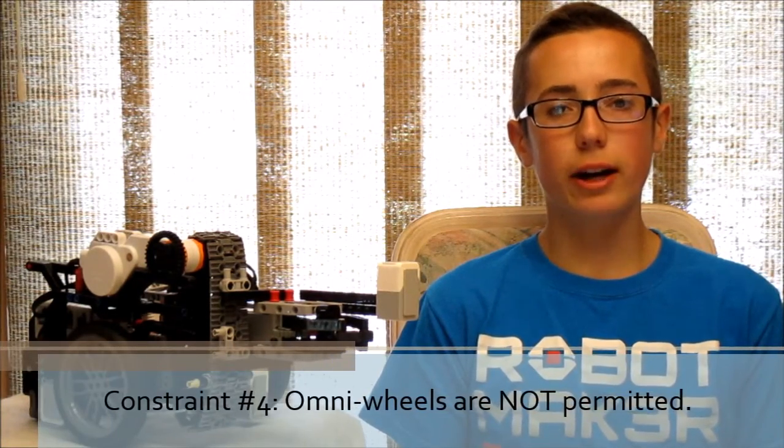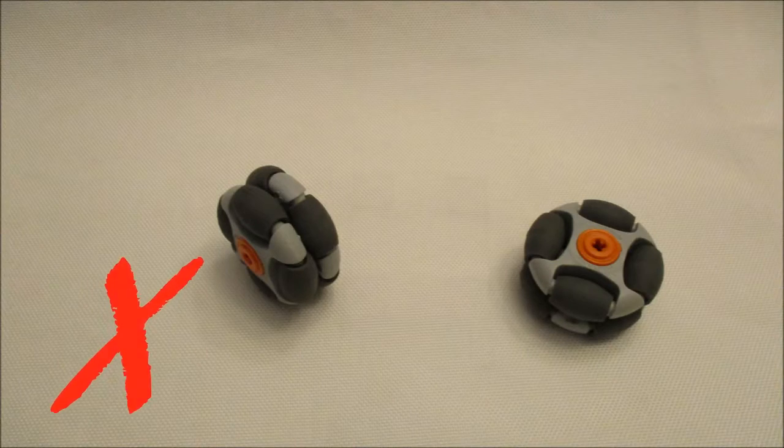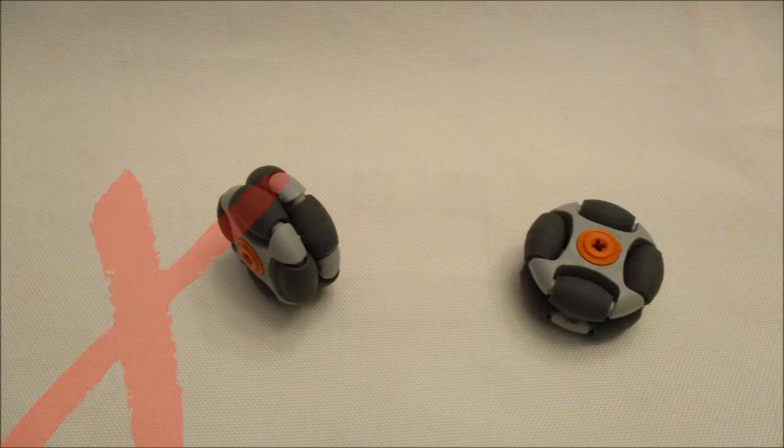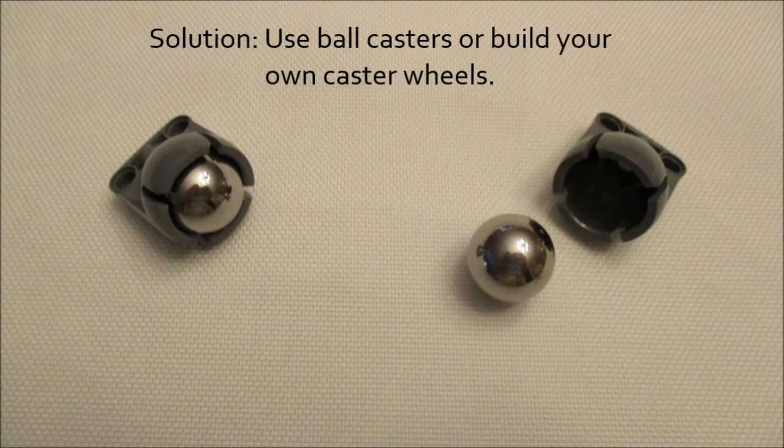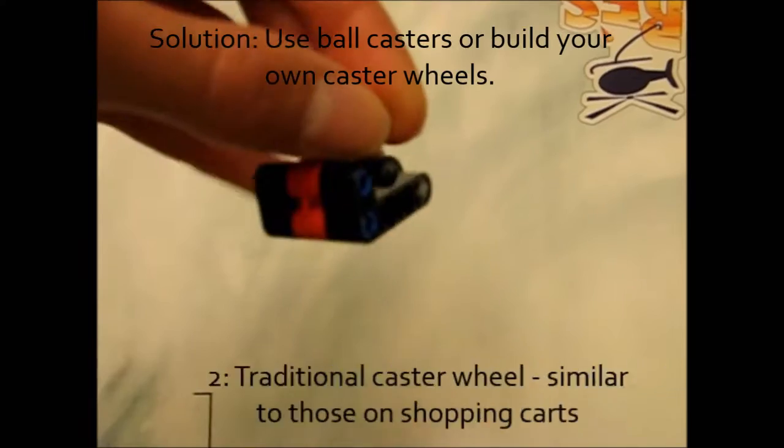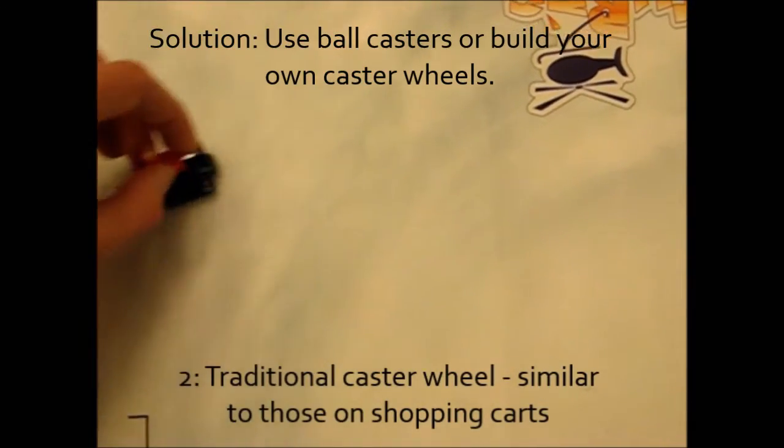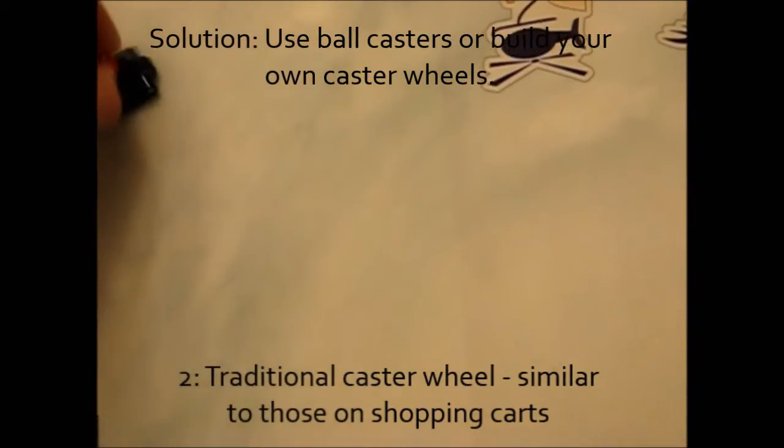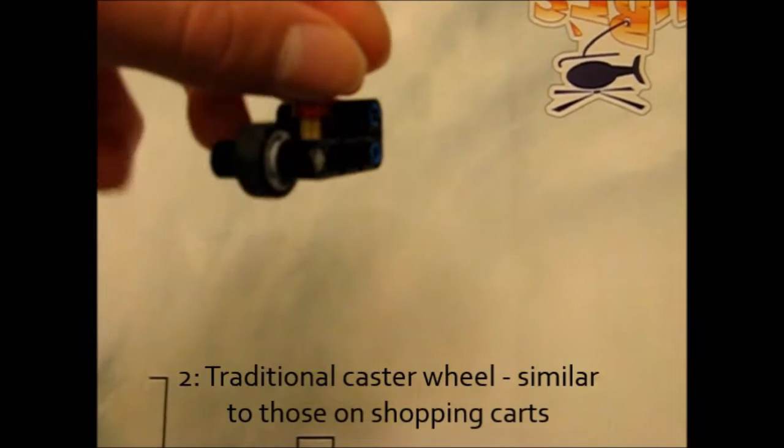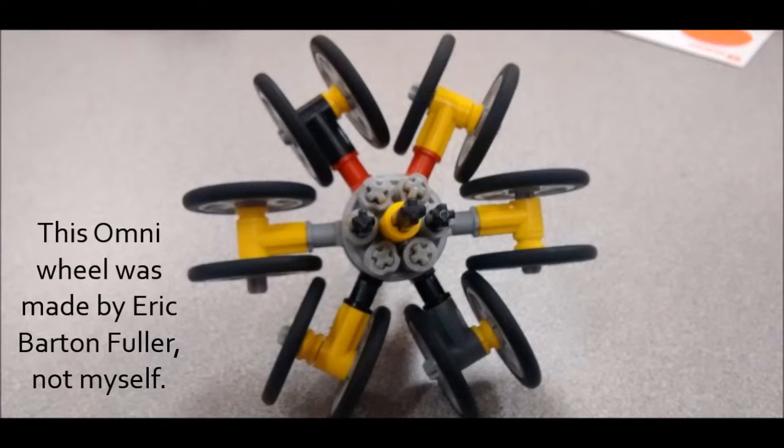Constraint number four is that omnidirectional wheels are not permitted. Now, this very obviously excludes things like omni wheels and rotocaster wheels shown in this picture here. However, the Lego ball caster pictured here is legal, or you could opt to manually build your own caster wheels. These are traditional wheels that are on a pivot so they can swivel around on an axis. However, it's not completely clear if it's legal for you to make your own omni wheels manually like in this picture. So if I were you, I would just refrain from using them.